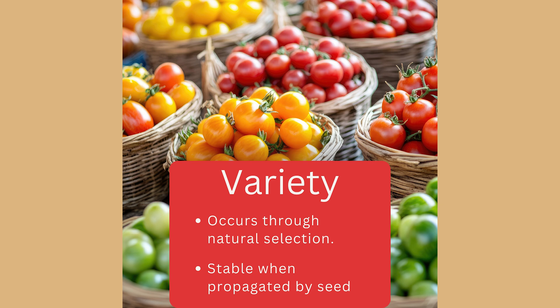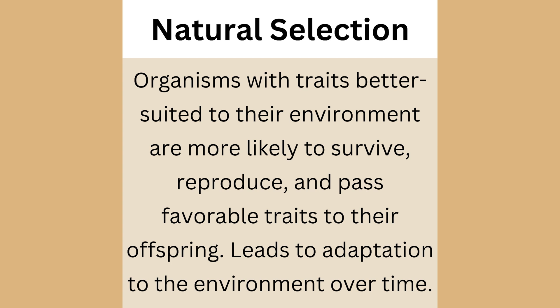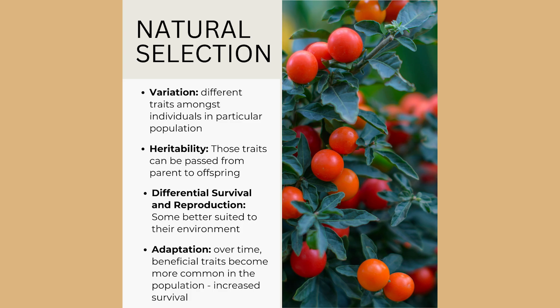A tomato variety often occurs through natural selection, without human intervention, and likely in a specific geographical location. Varieties are stable and consistent when you save those seeds and start new plants from them. Through natural selection, individuals with favorable traits are more likely to survive, reproduce, and pass those traits to offspring over generations. The keys to natural selection are: variation in traits among individuals, heritability of those traits, differential survival and reproduction, and adaptation over time as beneficial traits become more common.